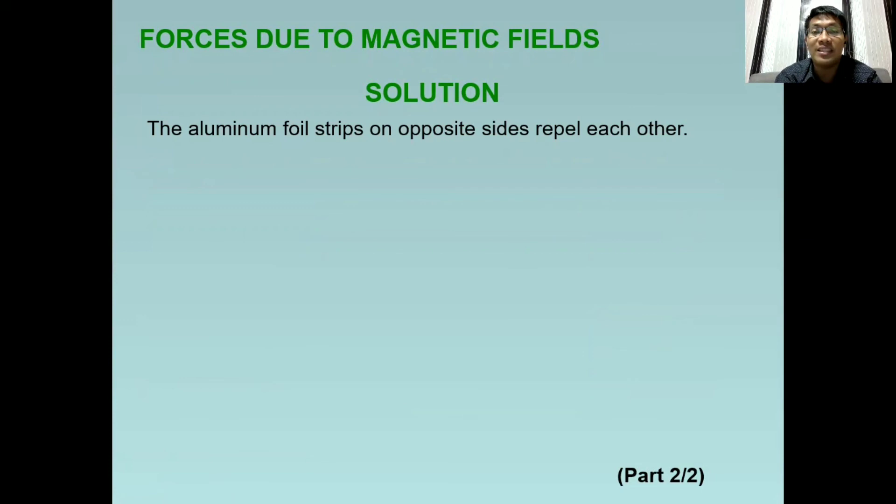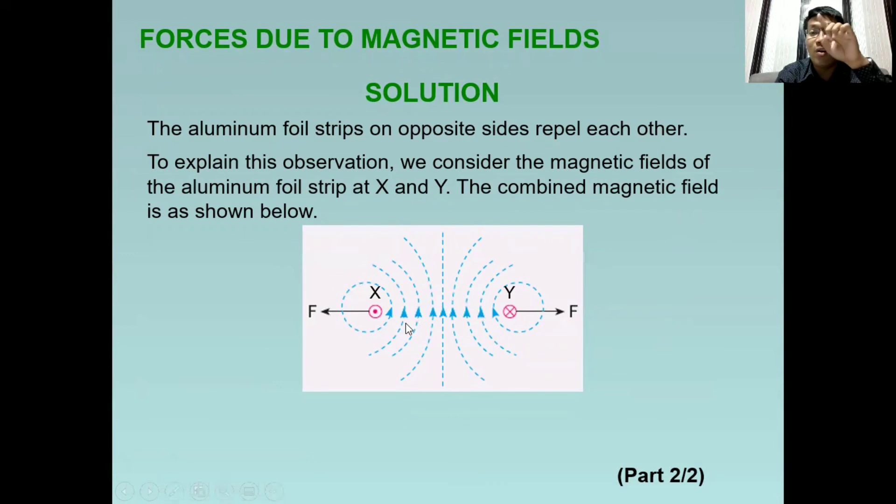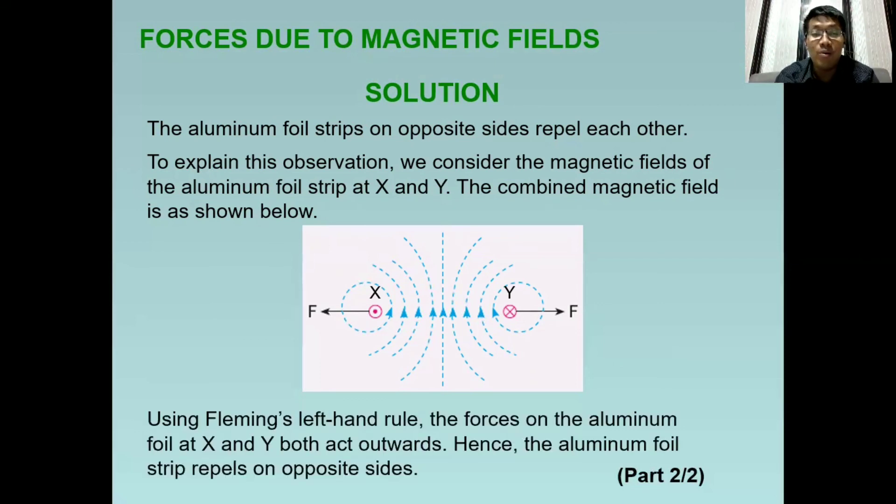The aluminum foil strip on the opposite side repel each other. So bakit kaya? Let's use this diagram. So kung titignan natin yung X side ng ating aluminum foil, yung magnetic field na nabuo doon or na form, it's moving counterclockwise. While for the Y side, it is moving clockwise. That's why, with that, we have opposite direction of magnetic field. And again, if they are opposite, they will repel each other. So what will happen is that the aluminum foil will move away from each other. So it will fold away from each other.